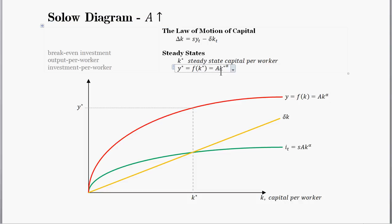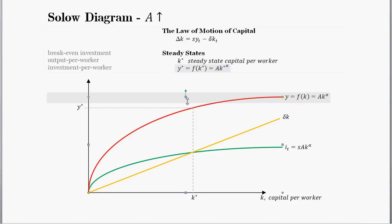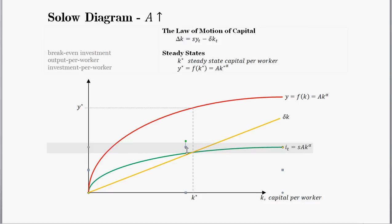How do things change in the steady state with a higher total factor productivity? Total factor productivity enters into the production function, so output per person y is a function of A times capital per worker raised to alpha. If A is bigger, this line shifts up. Also keep in mind that the investment line is also a function of total factor productivity — investment equals the savings rate times output per person, and A is in output per person. So the investment line also shifts up. Since the breakeven investment line stays constant and the investment line shifts up, capital per worker is going to have a new, higher steady-state level.